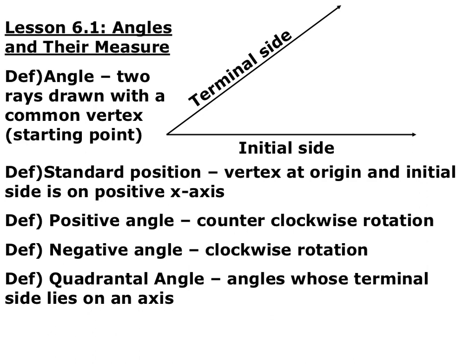Section 6.1 is angles and their measure. An angle has an initial side, which is the side we start our measurement from, and a terminal side, the side where we end our measurement. Usually the vertex is at the origin and the initial side lies along the positive x-axis — that's called standard position.